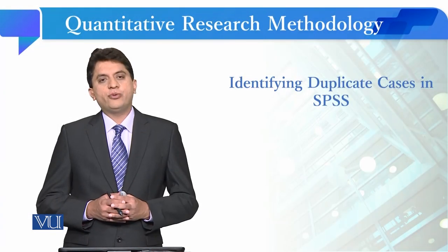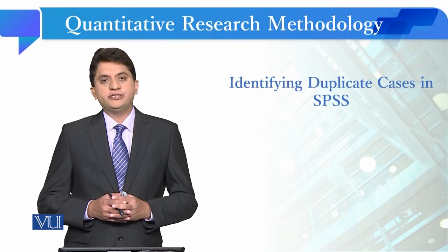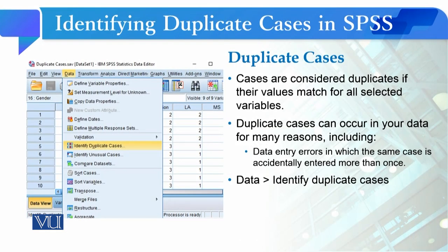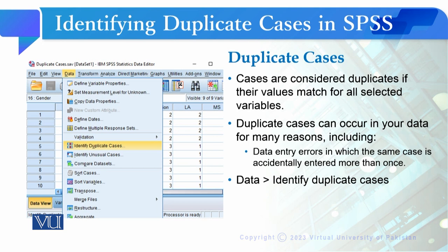Dear students, now we are going to learn how to identify duplicate cases in SPSS. Duplicate cases are those cases which are considered duplicates if their values match for all selected variables. Duplicate cases can occur in your data for many reasons, including data entry errors in which the same case is accidentally entered more than once, or sometimes students try to copy-paste the data to increase the sample size.